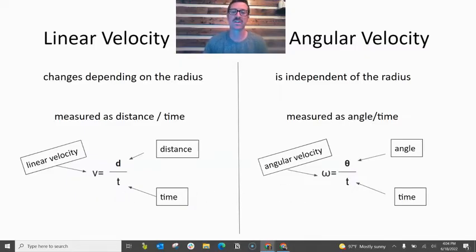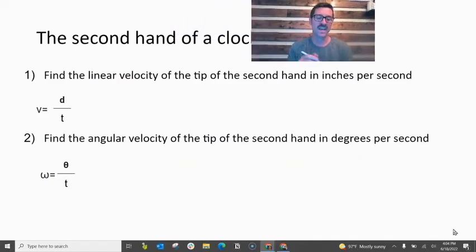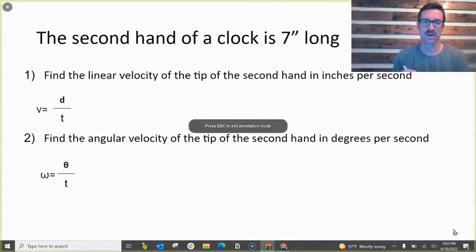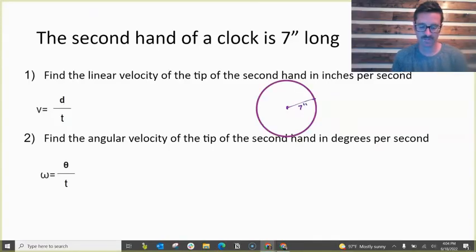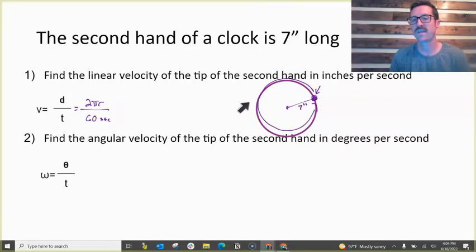But let's see how we can use these two relationships to solve problems. The second hand of a clock is seven inches long. First we're going to find the linear velocity. So if this is seven inches long, I want to find the linear velocity of the tip on the end of the second hand in inches per second. What we know is this point right here, the tip of the second hand, the distance that it travels in 60 seconds is going to be the circumference of the circle. Doesn't it make sense that the tip of the second hand travels the circumference of the circle in 60 seconds?